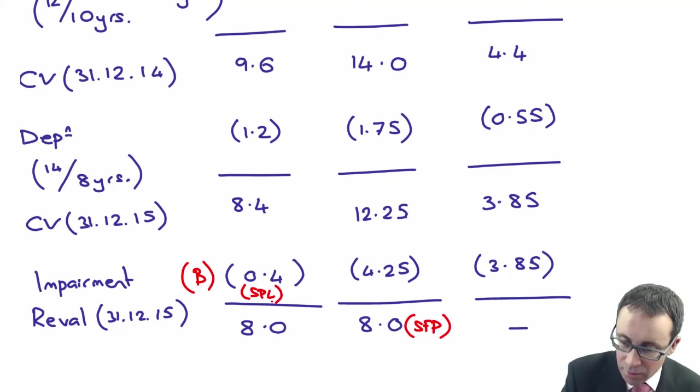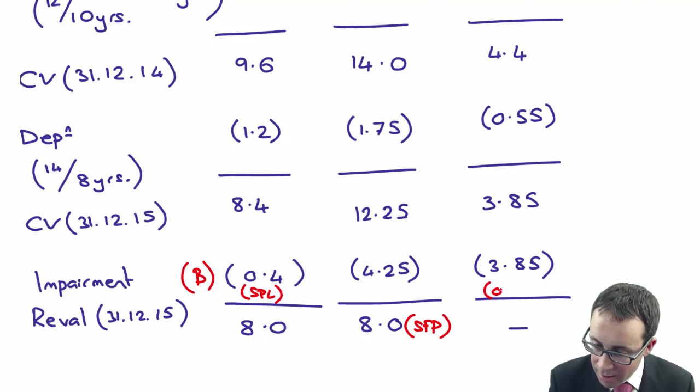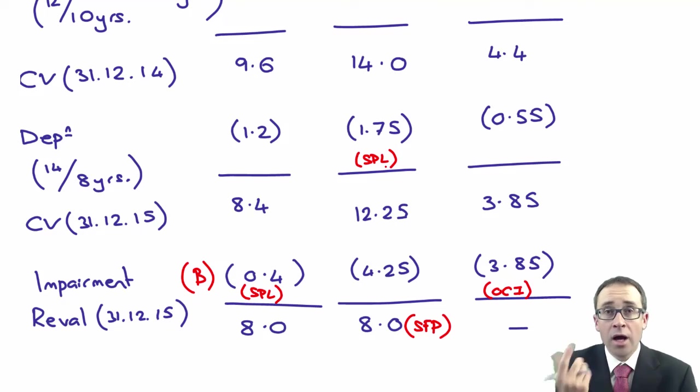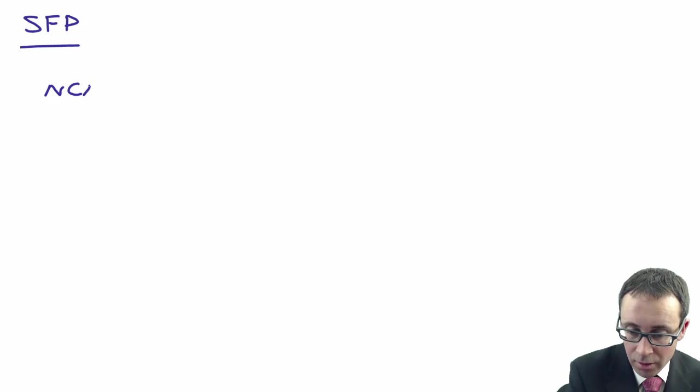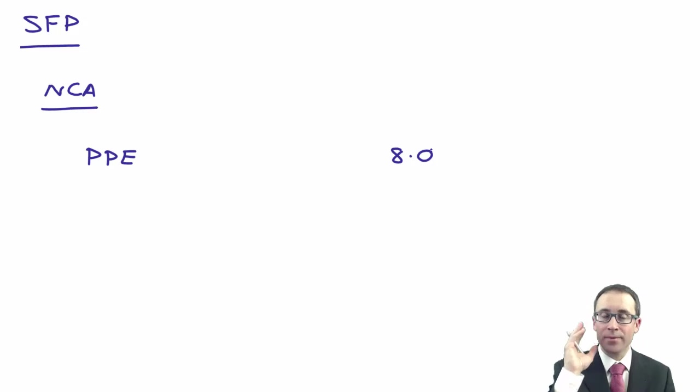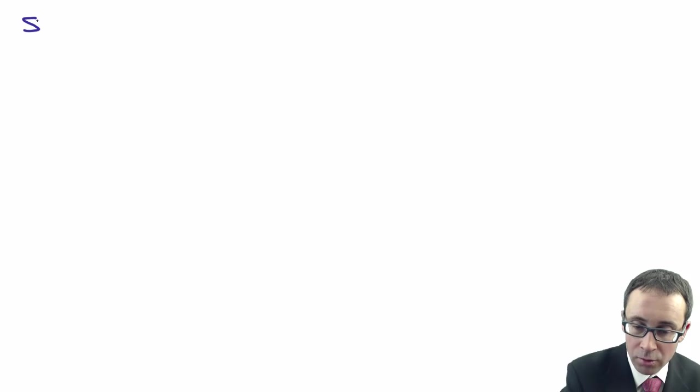In profit or loss, you have the 0.4 million. Then through your other comprehensive income will be the reduction in value of that asset. Again, the depreciation is what you show on the statement of profit or loss. Just to finish it off, we should put it all in to the financial statements. Within the statement of financial position, looking at the non-current assets, your property, plant and equipment is 8 million dollars. Within the equity, we don't need to put anything in because the equity has gone in terms of the other components of equity with regards to the revaluation.